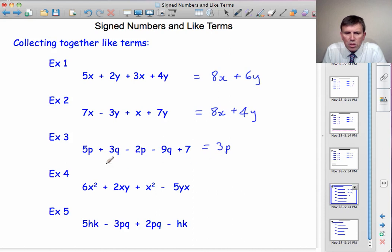Now the q's. Plus 3q minus 9q. Again, I'm looking at the sign immediately before it to tell me what to do. Plus 3q minus 9q is minus 6q. And then I've got that plus 7. I can't simplify it any further. It has to be there as a term on its own.